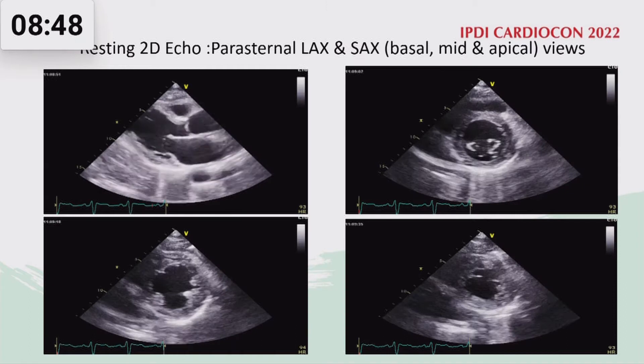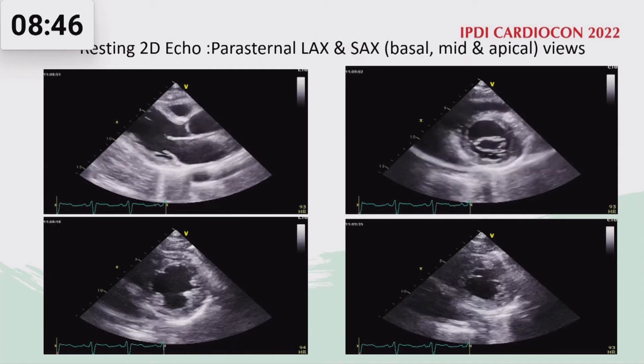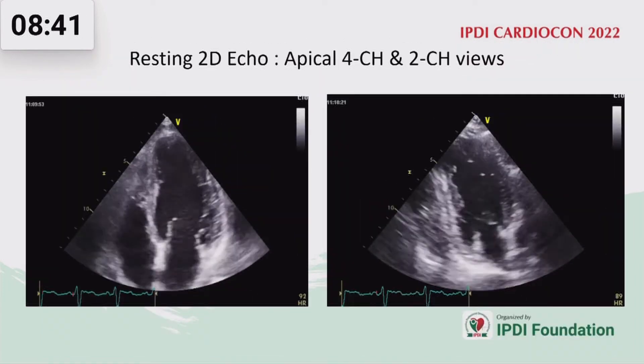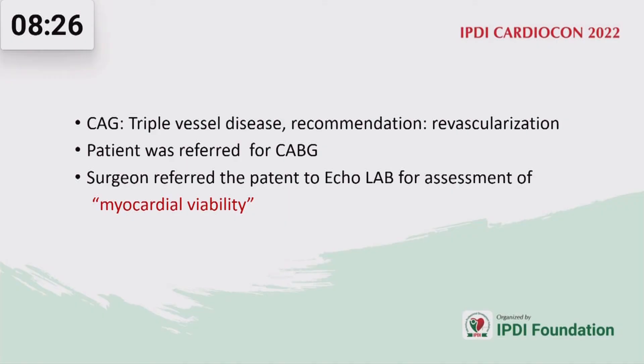Chest X-ray showed cardiomegaly with prominent bronchovascular markings. Resting 2D echo revealed akinesia in the anteroseptal, septal, anterior, and apical areas. Four-chamber view showed septal, apical, apical lateral, mid-to-apical anterior, and apical inferior akinesia. LV was dilated with ejection fraction of 34%. Angiogram revealed triple vessel disease, and the patient was referred for surgical revascularization, then sent to the Echo Lab for viability assessment.